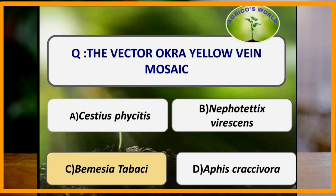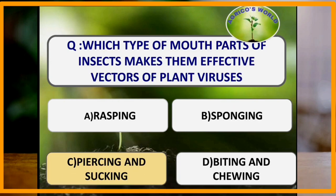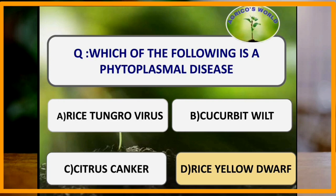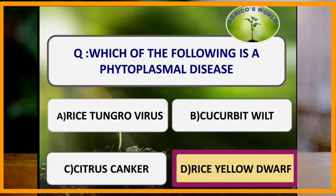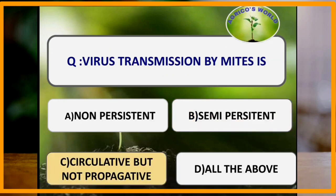The vector of okra yellow vein mosaic is Bemisia tabaci. Piercing and sucking type mouthparts make insects effective vectors of plant diseases. Rice yellow dwarf is a phytoplasmal disease. The vector of yellow mosaic of mung bean is Aphis craccivora. Virus transmission by mites is circulative but non-propagative.